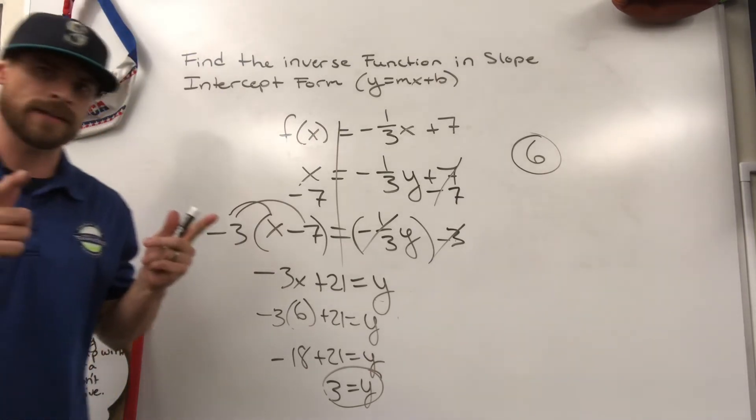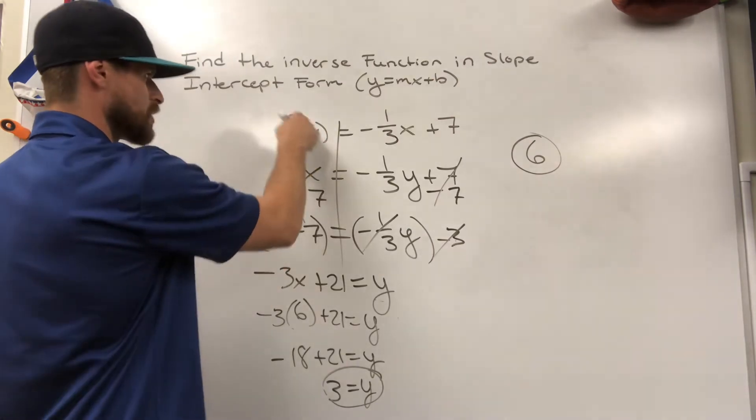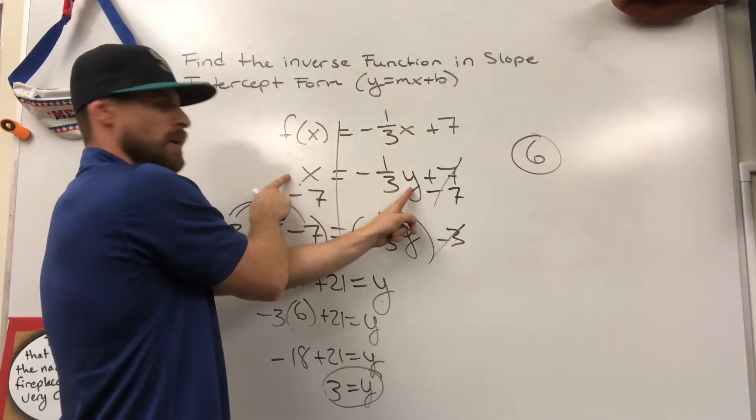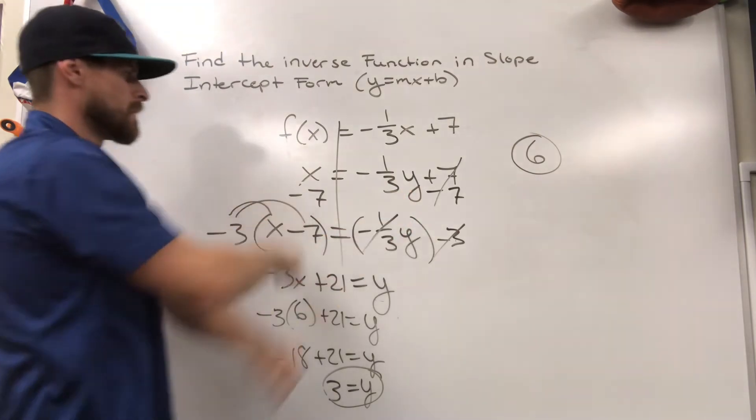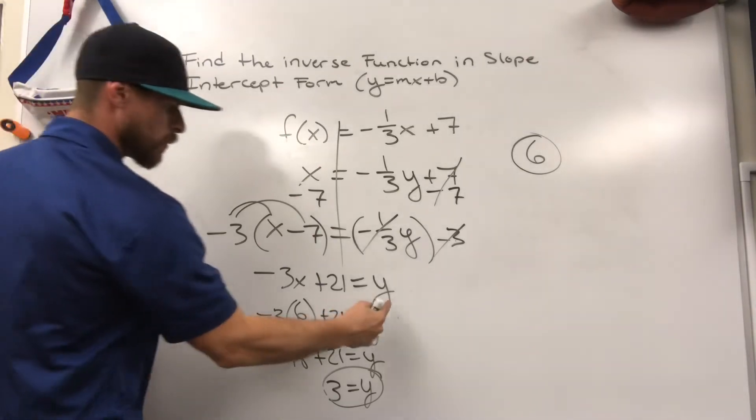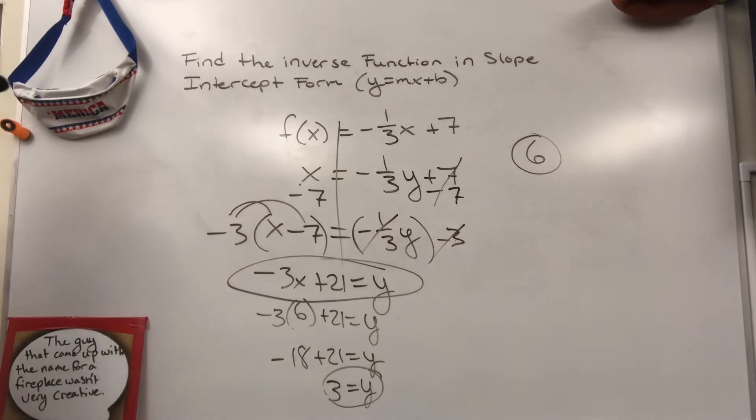So break it all down one more time. What did we do? We took the function, we said f of x looks better as a y, we changed it to a y, and then we flipped these. Notice they're flipped right there. Once we got them flipped, we move everything away from y, so y is by itself. Now you have a slope intercept form equation.